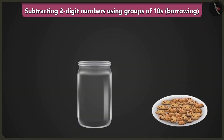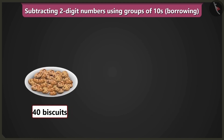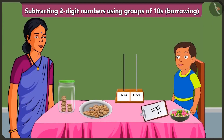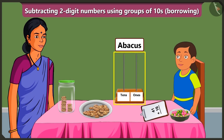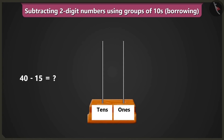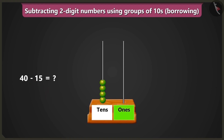There are 40 biscuits in this plate. If I fill this jar with 15 biscuits, how many biscuits would remain? To know this, we would have to subtract 15 biscuits from 40 biscuits. But can you solve the subtraction without writing, just by borrowing with the help of the abacus? If we put 4 beads in the box of tens, that is 4 tens — 40. We have to subtract 1 ten and 5 ones, but there are no beads in the box of ones.